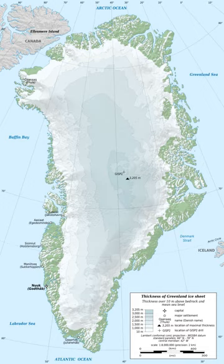Extreme points of the island of Greenland: the northernmost point is Cape Morris Jesup at 83° N. The southernmost point is a peninsula near Nanautalik at 60°08′ N. The westernmost point is Cape Alexander. The easternmost point is Nordostrundingen. The highest point is Gunbjörn Fjeld at 3,694 metres.